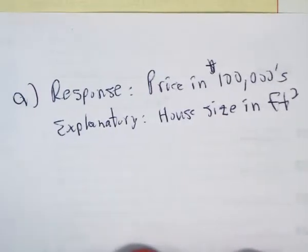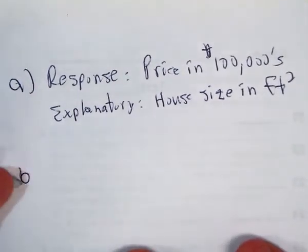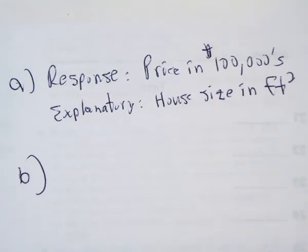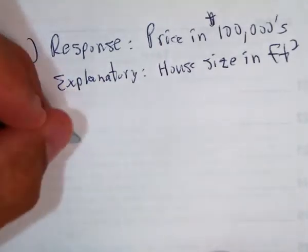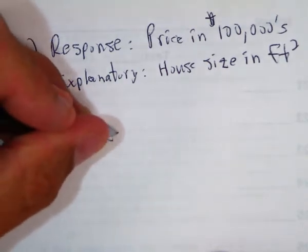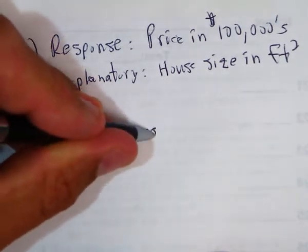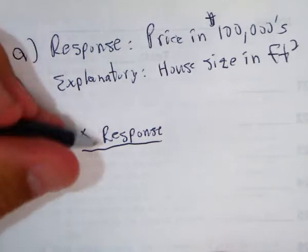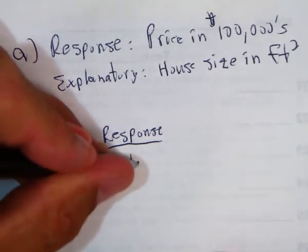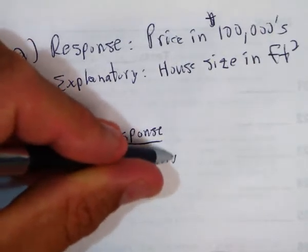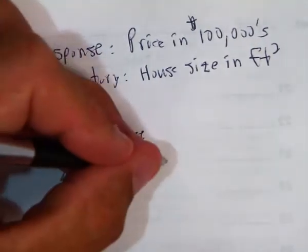Okay, and then B, it says, what does the slope mean? Well, the slope is the change in the response variable as the explanatory variable changes by one.